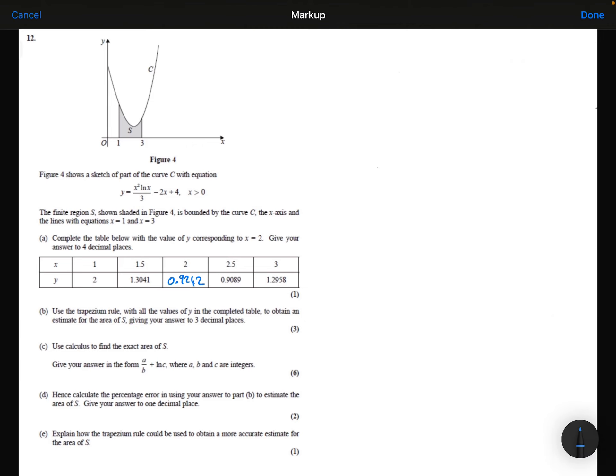Part B: Use the trapezium rule with all of the values of y in the completed table to obtain an estimate for the area of S, giving your answer to three decimal places. The trapezium rule is a half h of the first value plus the last value plus two lots of everything in between. In this case, the h is 0.5. We can see that we are going up in 0.5s here. Each strip would be 0.5 wide.